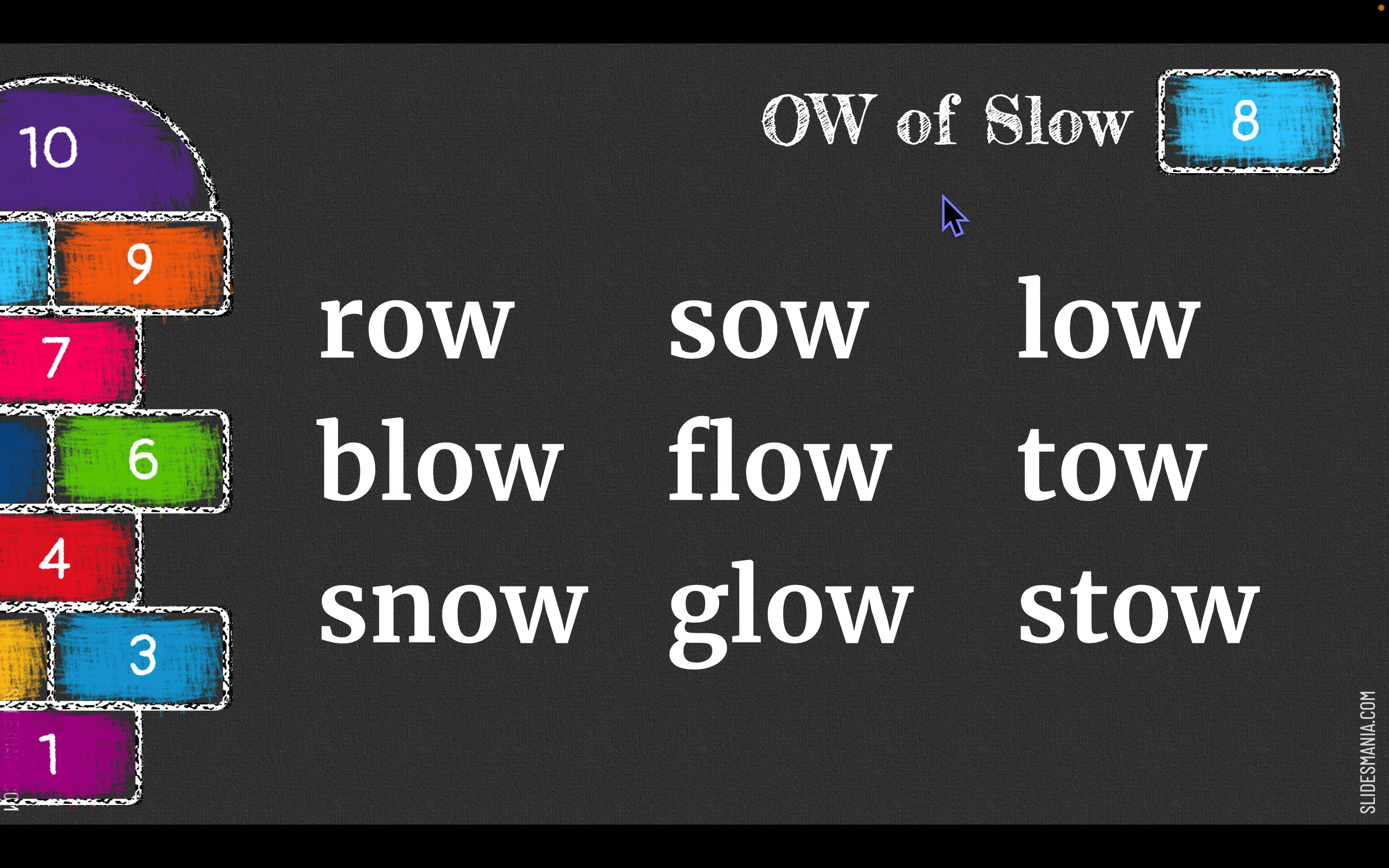Let's practice words with the O of slow: row, sow. This word sow means to plant a seed. Low, blow, flow, tow.